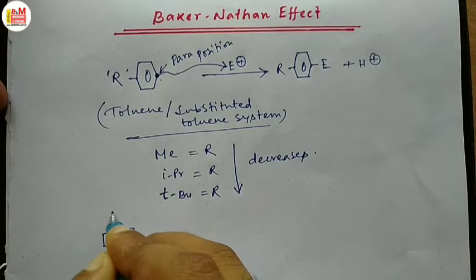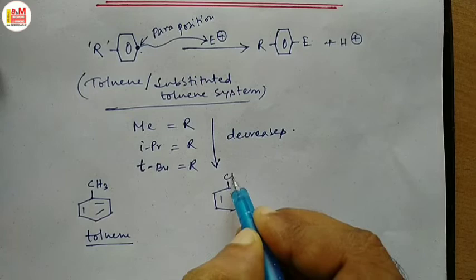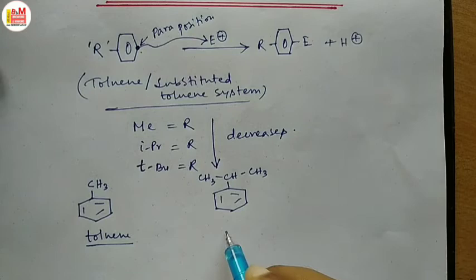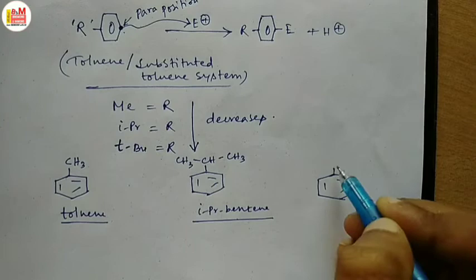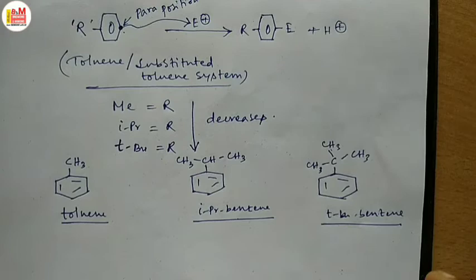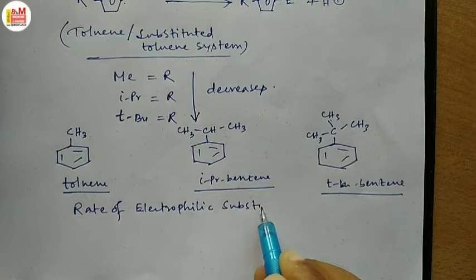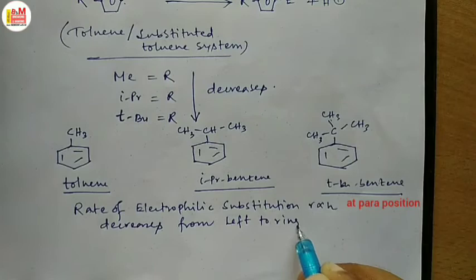Here we have the methyl group — that is pure toluene. Here we have isopropylbenzene, which is a substituted toluene, and we also have tertiary butylbenzene, another substituted toluene. The rate of electrophilic substitution reaction decreases from left to right — this is the decreasing order of the rate of reaction.